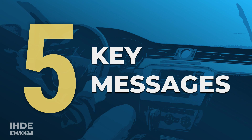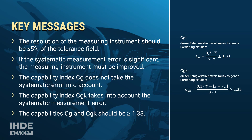That was a lot of new information, so let's conclude by repeating the five most important key messages. The resolution of the measuring instrument should be equal to or smaller than 5% of the tolerance field. If the systematic measurement error is significant, the measuring instrument must be improved. The capability index Cg does not take the systematic error into account, while the capability index Cgk does. Both Cg and Cgk should be equal to or greater than 1.33.